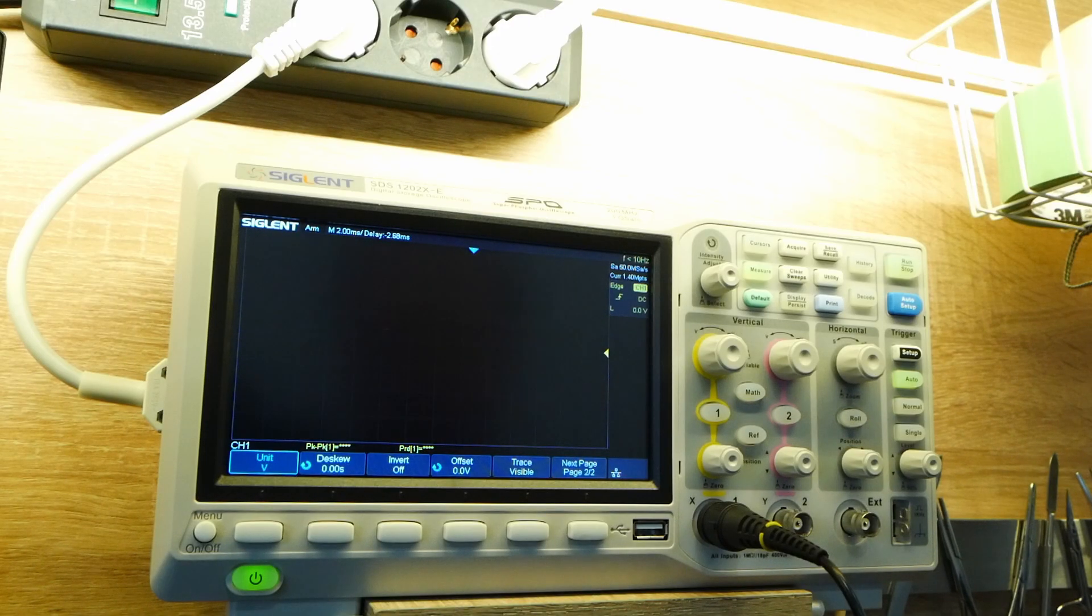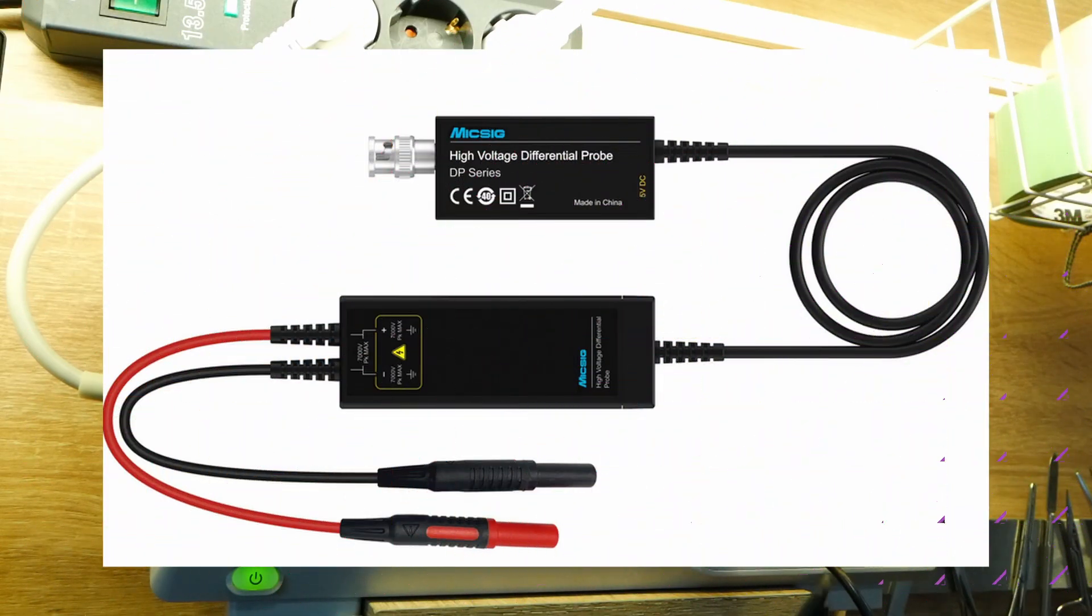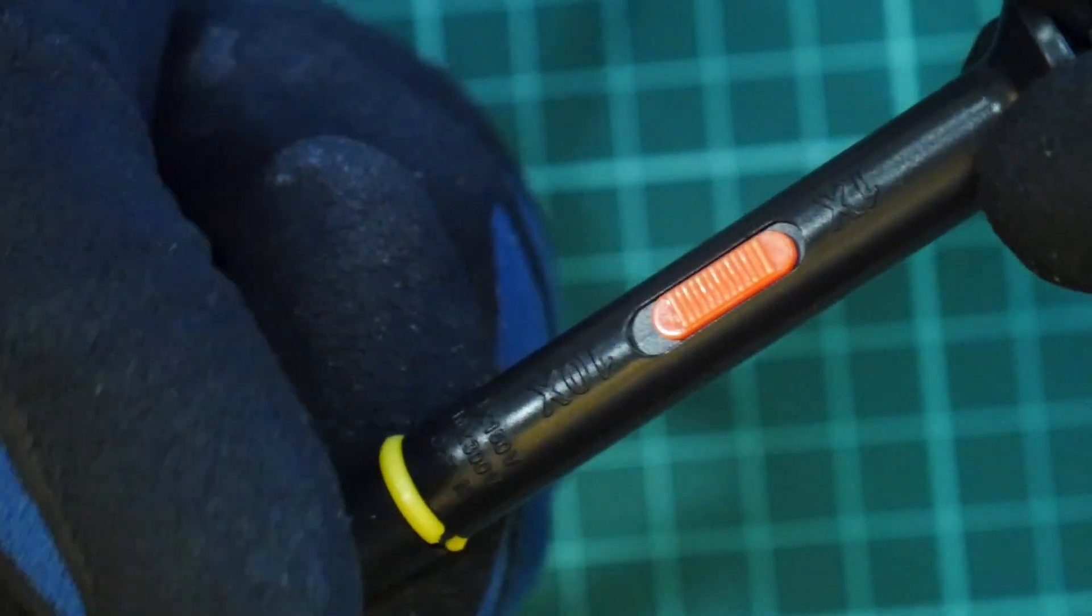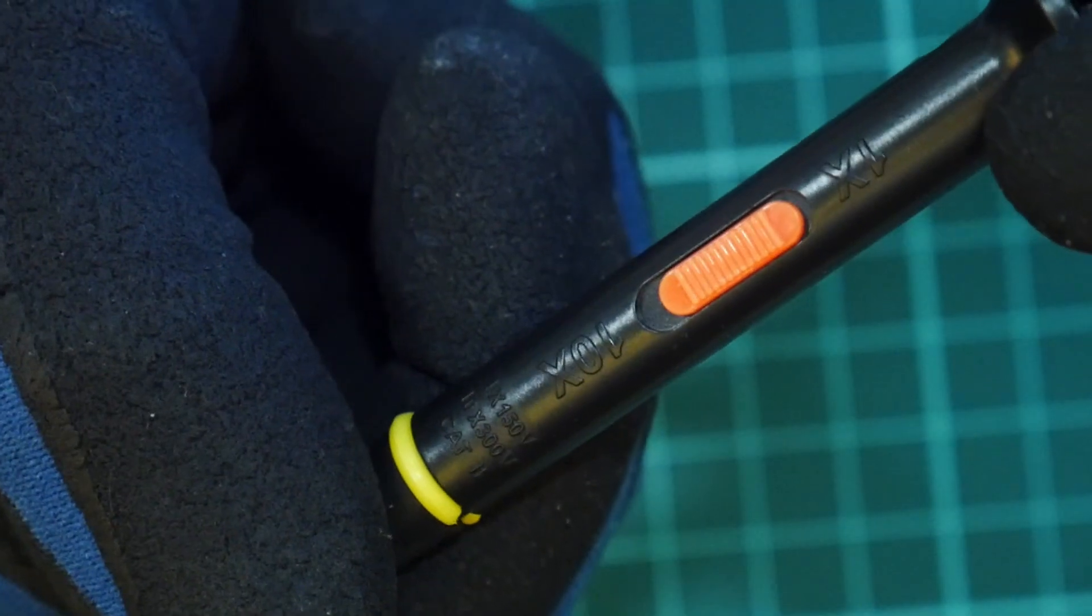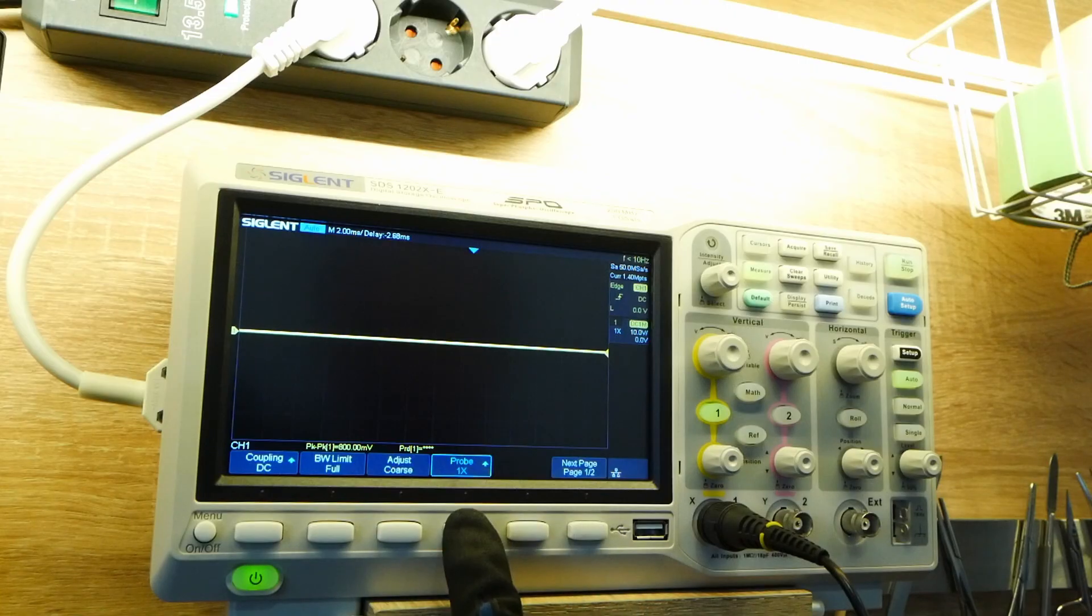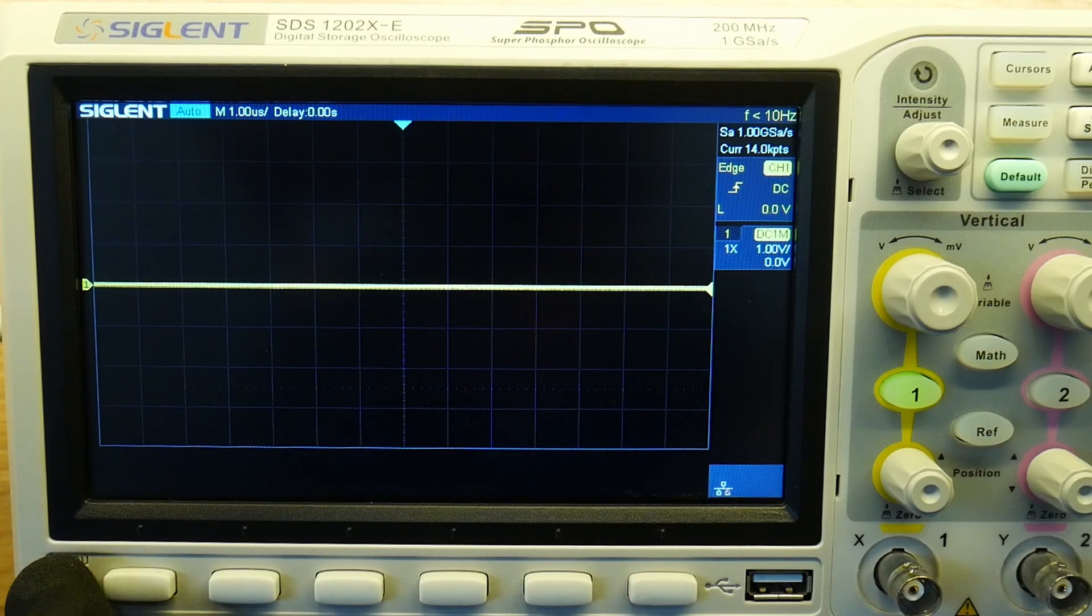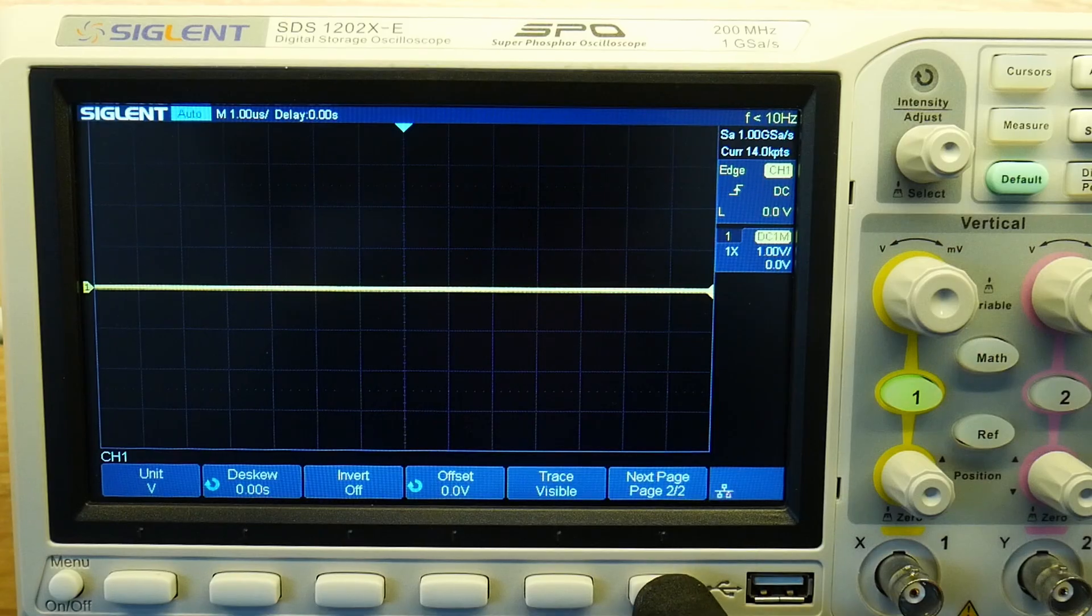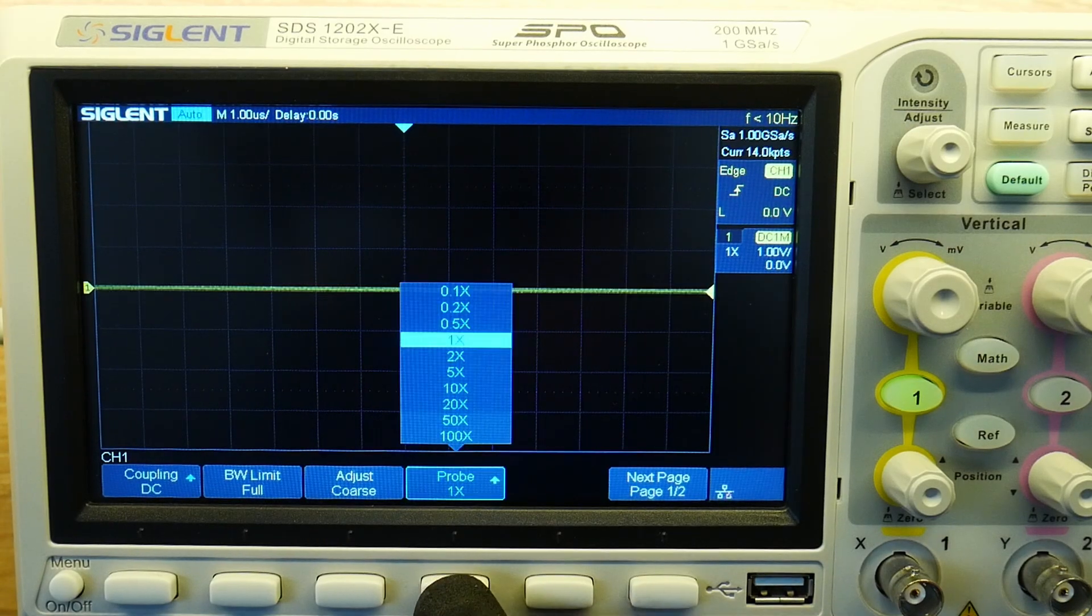So first, if you want to measure, well the best way would be to have a differential probe, but we don't have that. So set your probe to 10x. We will turn on channel one, we will change here also our probe to 10x. So this is 10x and oscilloscope also set to 10x.